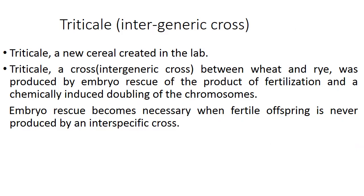Another success story is Triticale, given by Rimpu. This is the most successful intergeneric cross and is commonly called a man-made cereal. A cross between wheat and rye was produced by embryo rescue of the product of fertilization and chemically induced chromosome doubling. Through the colchicine doubling process, embryo rescue becomes necessary when fertile offspring need to be produced from an interspecific cross.